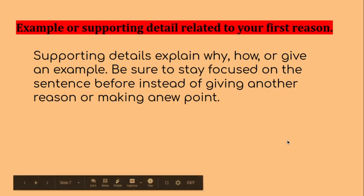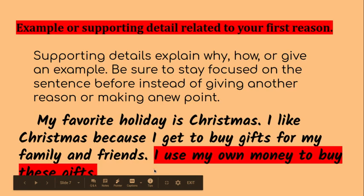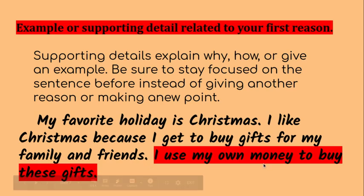Your third sentence has to be an example or supporting detail related to that first main point or first reason. Supporting details explain why, how, or give an example. Make sure you stay focused on the sentence you just wrote — that first reason — instead of giving a new reason. We're staying focused on how I get to buy gifts for my family and friends, so a detail about that is how I do it: I use my own money to buy these gifts.